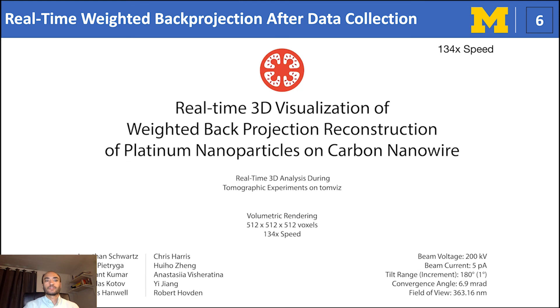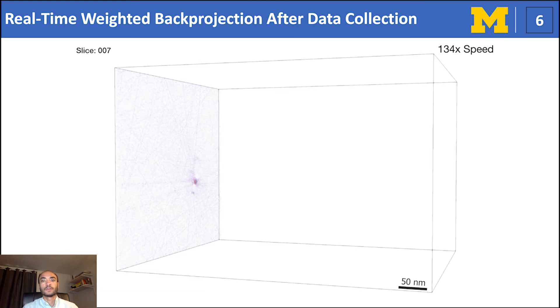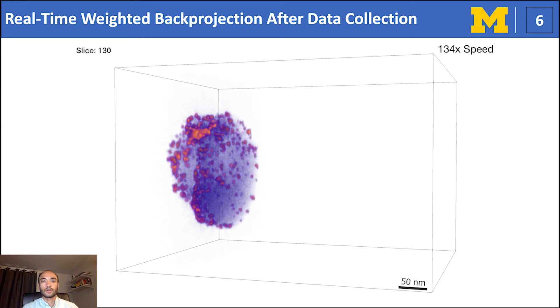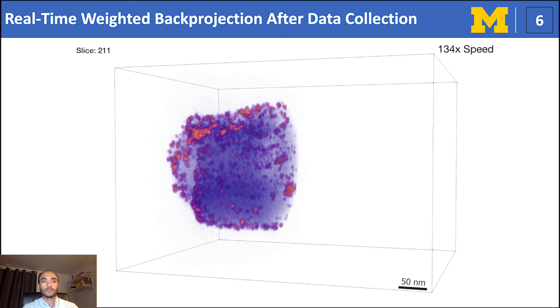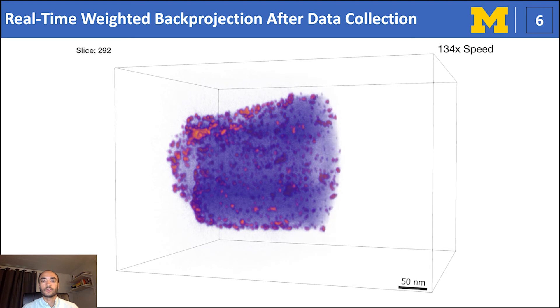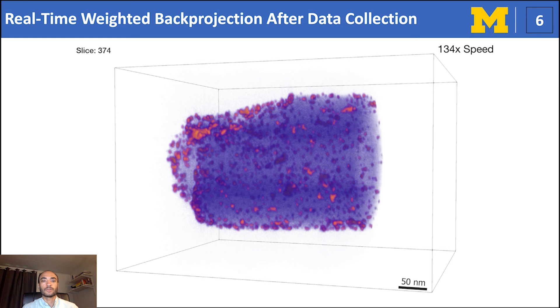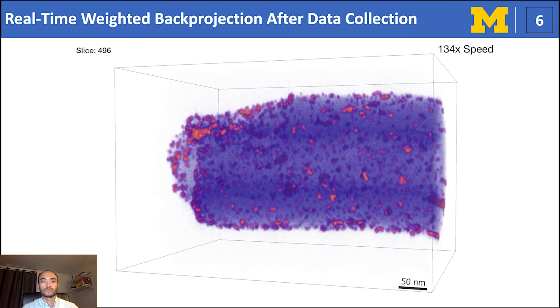The real-time visualization capabilities on TomViz is not merely limited to online applications, but is actually a viable tool to assess quality offline. On TomViz, we can display live volumetric updates for non-iterative algorithms as they occur slice-by-slice. Here, I'm demonstrating a weighted back projection of platinum nanoparticles on carbon nanowire. This video is sped up faster than the actual computation. These volumetric updates are provided along the direction parallel to the rotation axis, and we see more structure become visible as the reconstruction goes towards completion.